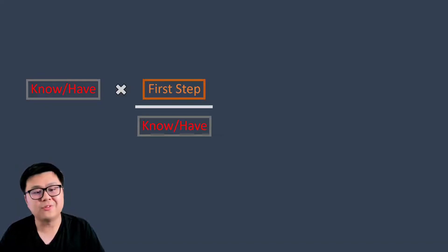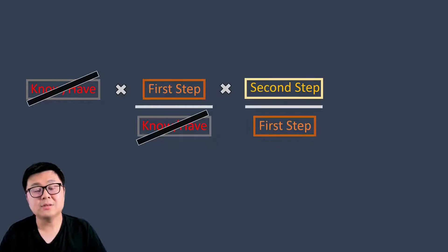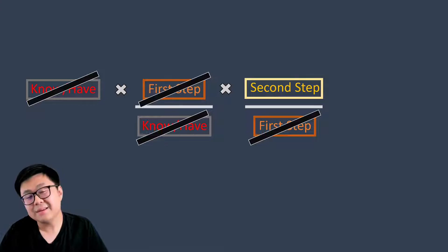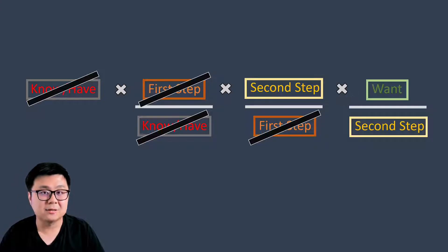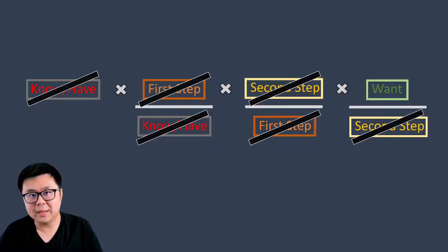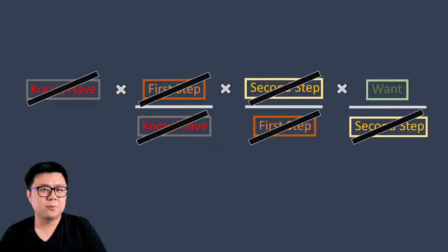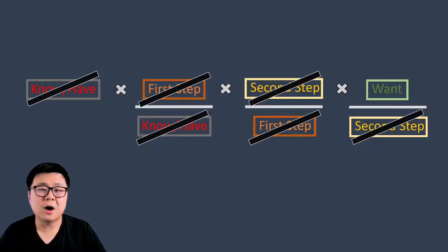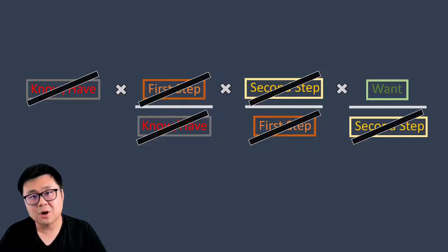You start with what you know, then multiply by a ratio of the first step over what you know. As per the rules of math, you cross out what you know, then do another step — the second step over the first step — and cross out whatever is in the first step. Eventually you get to what you want. You'll be taught four, five, or six ratios in this chapter, and you just have to focus on what you want to cross out to eventually get where you want.